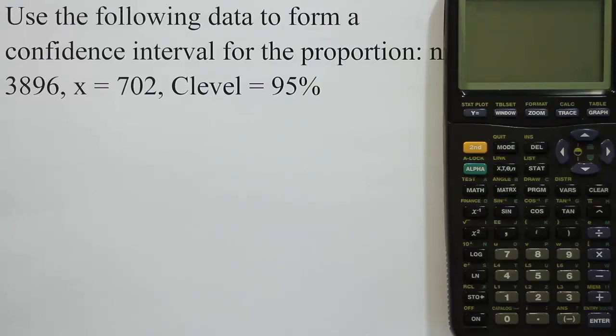In this video, we're using the calculator to determine a confidence interval for the population proportion. We're going to create this confidence interval using the graphing calculator's feature. It's a very easy procedure if you have the summary data values like we have here.